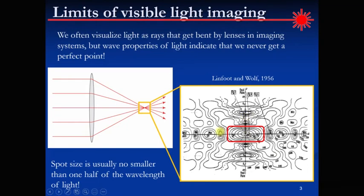This picture, which I use as a zoom-in, was first done by Linfoot and Wolf. Wolf was my PhD advisor — this was some of his early work done in 1956, and they constructed this diagram theoretically. It took them weeks to construct it. The idea is that when you focus light, you don't get an ideal point; you get a smeared-out blob of light, and that limits how well you can resolve the objects you're trying to image.